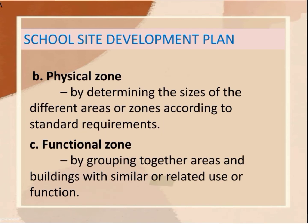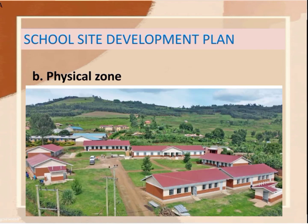Another school site zone is the physical zone. It is determined by the sizes of the different areas or zones according to standard requirements. An example of an area zone by its physical characteristics is defined in terms of characteristics like development density, minimum lot size, and building coverage, placement, and height.